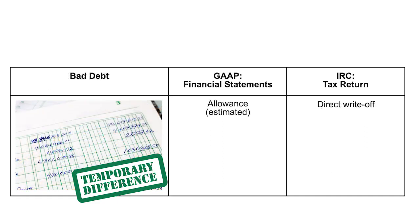Finally, bad debts: you are allowed to estimate the amount of bad debts for your financials — debit bad debt expense, credit allowance for doubtful accounts. On the tax return, you're only allowed to deduct the amount you actually wrote off; you're not allowed to estimate. So in theory, they will eventually agree, but there will be a temporary timing difference that will create an M1 adjustment.